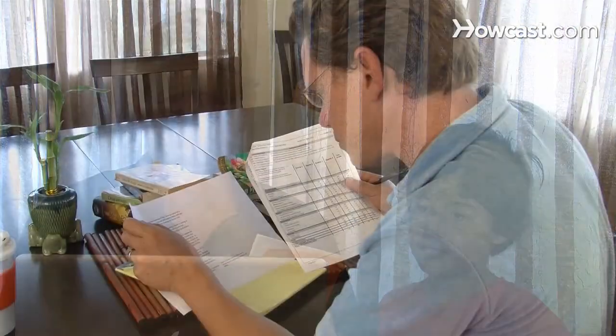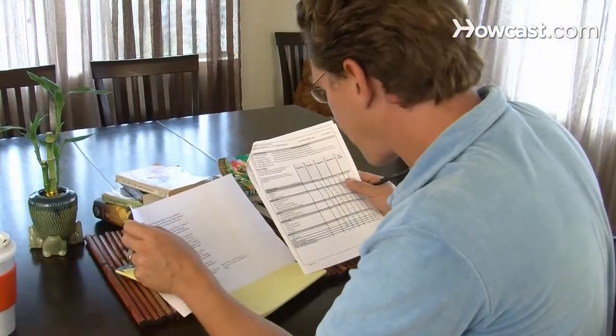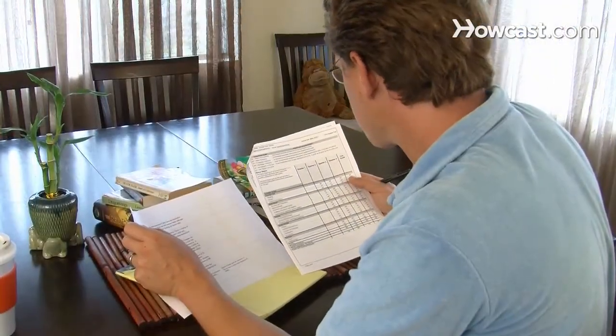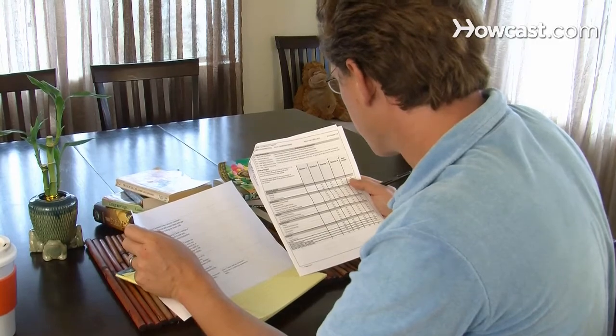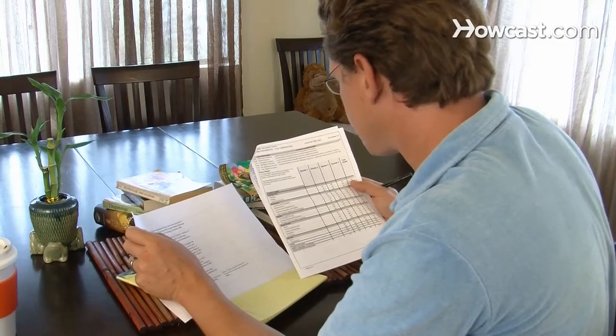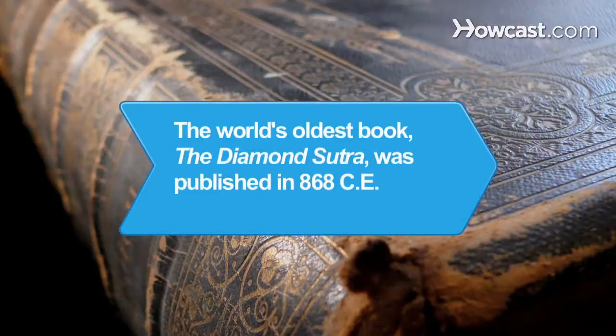Step 4. Compare the Lexile text measures for any book the child wants to read with the text measures in the grade equivalence chart to determine the grade level the books correspond to. Did you know? The world's oldest book, The Diamond Sutra, was published in 868 CE.